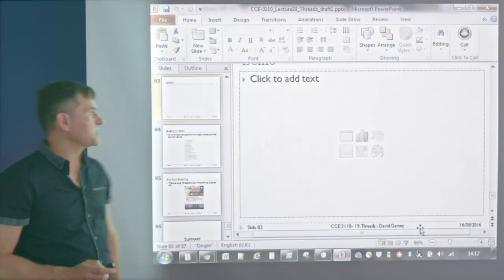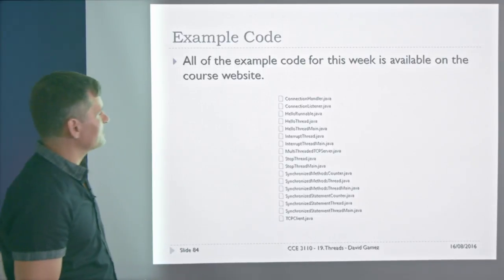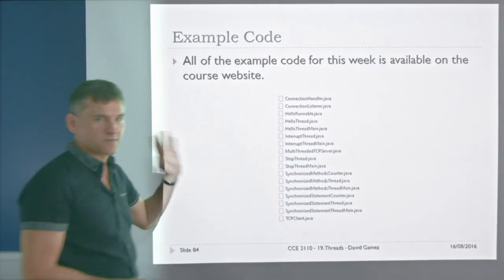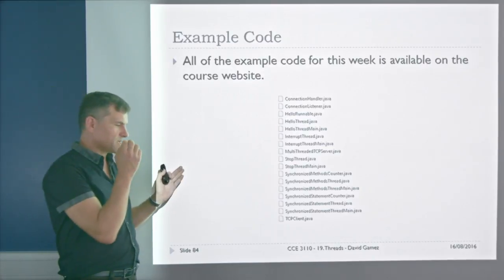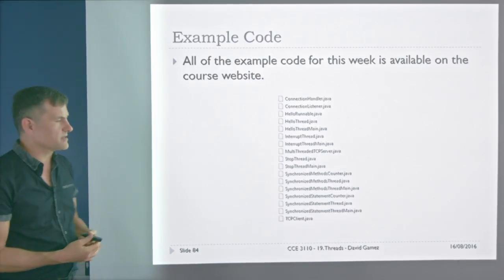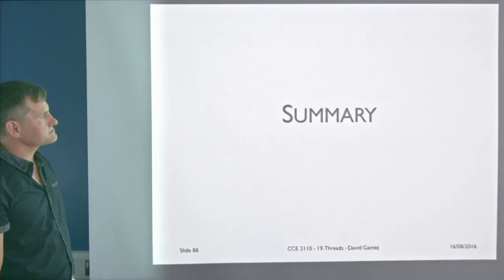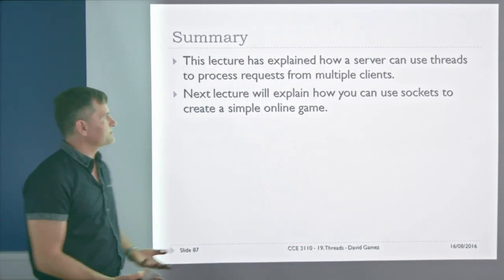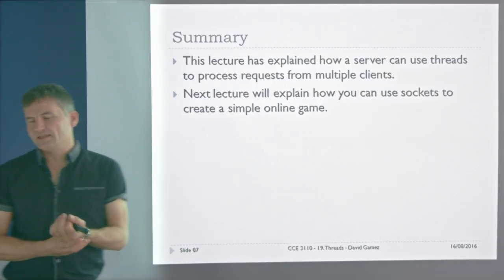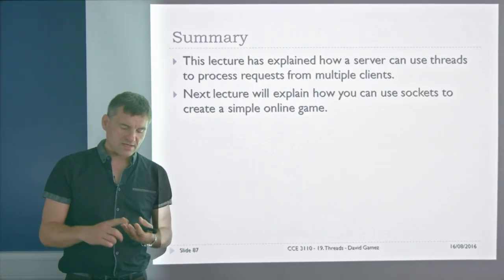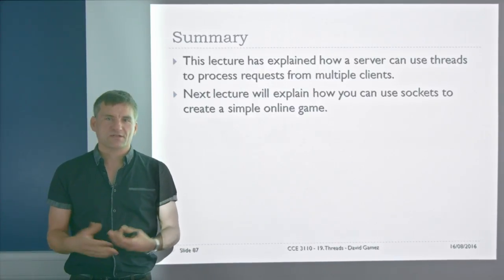You can run this at home and adapt it for your projects. All the example code for this lecture is available on the course website — there's quite a lot of it but it's all useful. We'll also run through examples in lab sessions. Further reading: there's a chapter on threads in Liang. This lecture covered how to use threads to process requests for multiple clients, which will be very useful in your online game. The next three lectures will explain how to build simple online games as a starting point for your second projects.